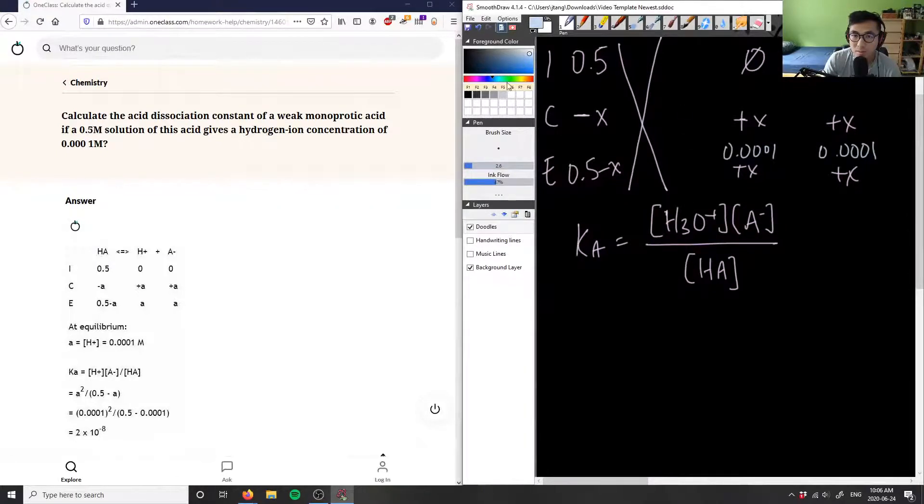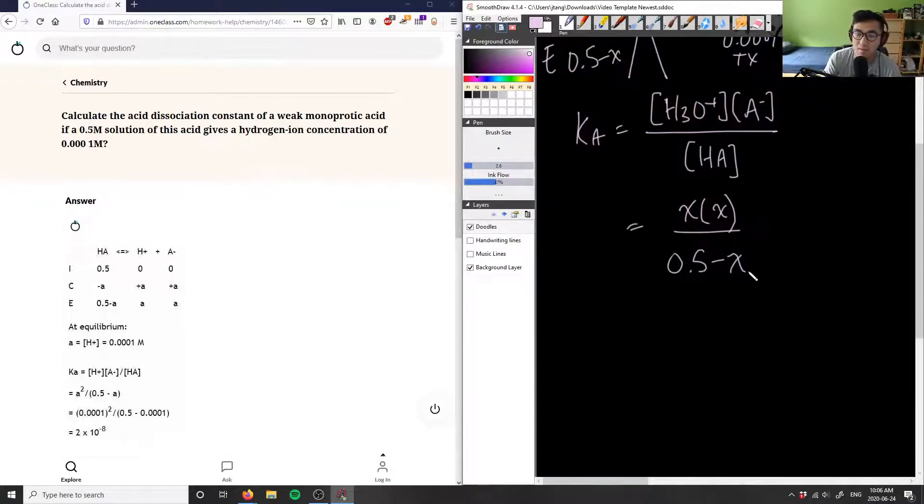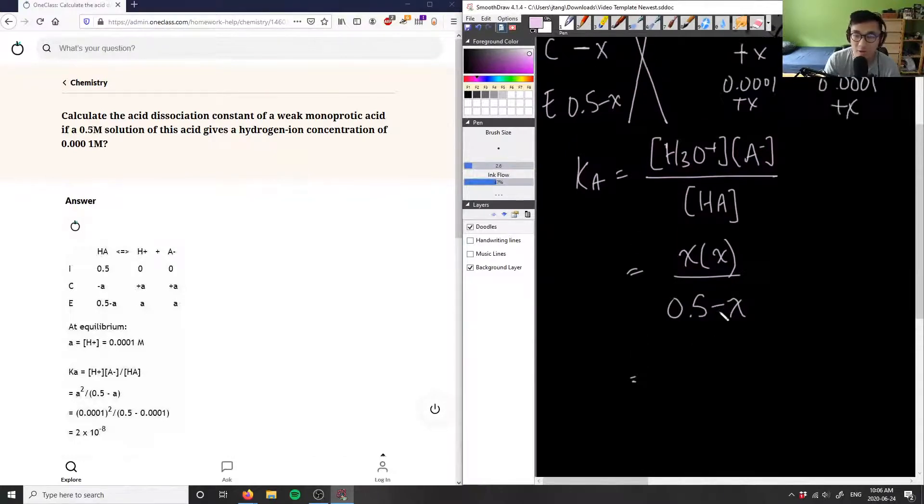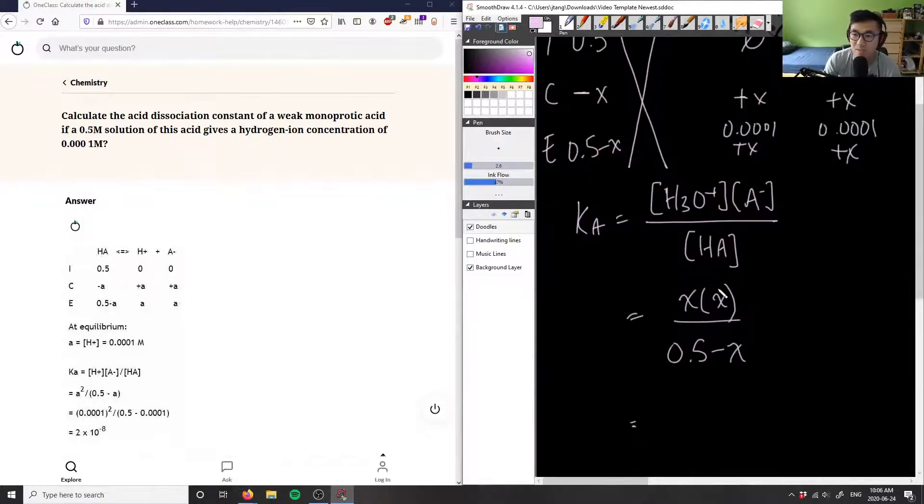So let me substitute these. So hydronium, which is x, times A minus, which is x, divided by HA, which is 0.5 minus x. And then I can say that my x here, or the concentration of our hydronium at equilibrium is 0.0001. So I can say that my Ka is equal to 0.0001 times 0.0001.